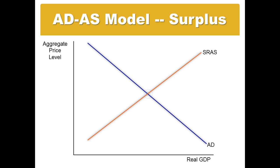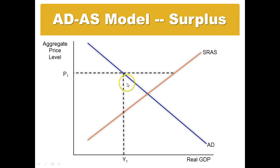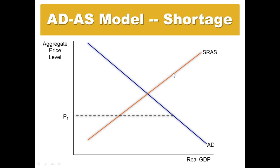If the price level were to be below or above the equilibrium, then we have either shortages or surpluses. If the price level P1 is above the equilibrium point, we have a surplus — the quantity demanded is less than the amount being supplied by producers. If the price level is below the equilibrium point, then the quantity supplied, Y sub 1, is less than the quantity demanded, and we have a shortage.